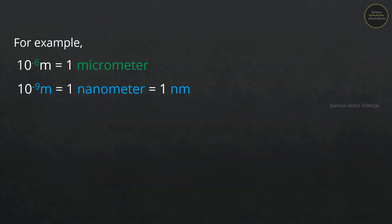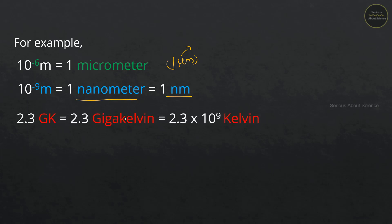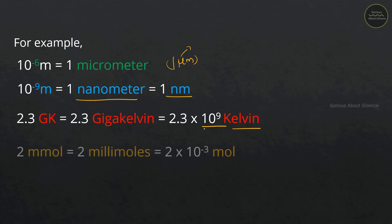For example, 10 raised to minus 6 meters is 1 micrometer, denoted with the micro symbol. Similarly, 10 raised to minus 9 meters is 1 nanometer, represented as 1 nm. For 2.3 gigakelvin, since giga is 10 raised to 9, this equals 2.3 into 10 raised to 9 kelvin. For 2 millimoles, milli means 1 by 1000, so it equals 2 into 10 raised to minus 3 moles, or 0.002 moles.